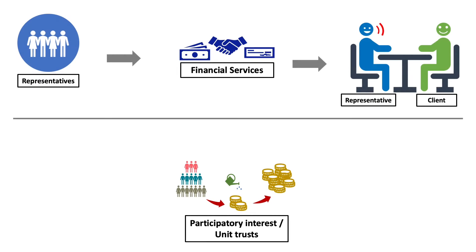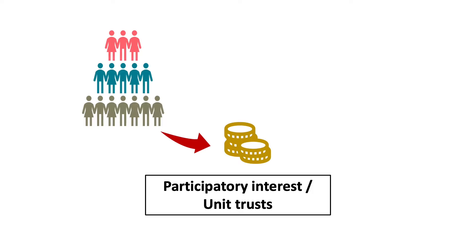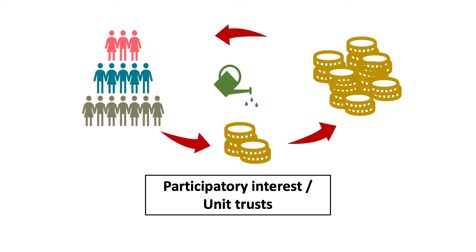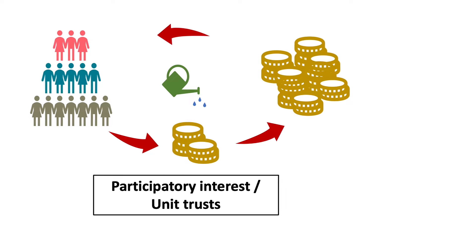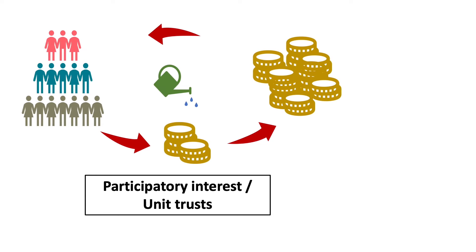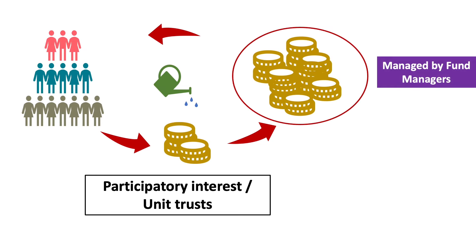Next, we have participatory interest in one or more collective investment schemes, or unit trusts. With unit trusts, clients' moneys are pooled together to buy different types of investments that are held as a unit. Each client that invests will share in the risks and rewards of that investment in proportion to his or her share. Unit trusts are managed by FSPs called discretionary FSPs or fund managers.